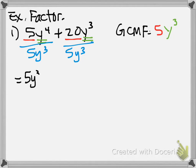So we have 5y cubed goes out in front, and then we have y is left for the first term. And then we have a plus. And what's 20 divided by 5? 4. What's y cubed divided by y cubed? 1. And 4 times 1 is 4. Done.